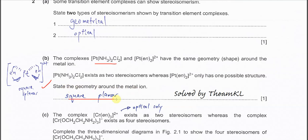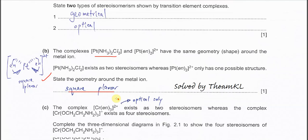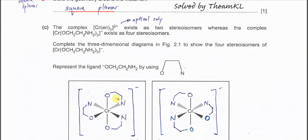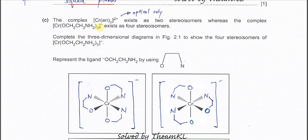Part c: the complex chromium with three en ligands exists as two stereoisomers, which are optical isomers. This is something most of you should know.